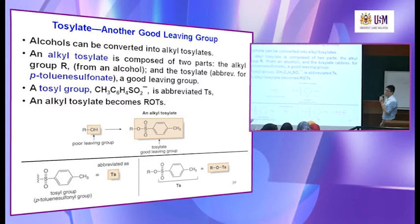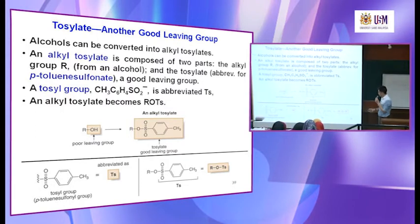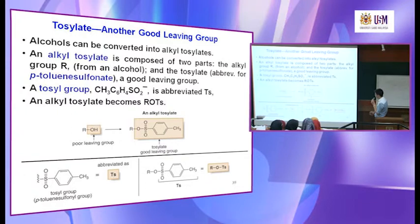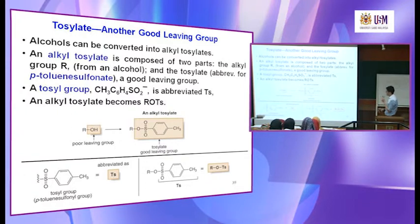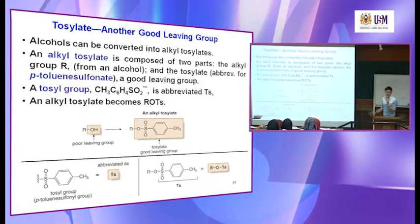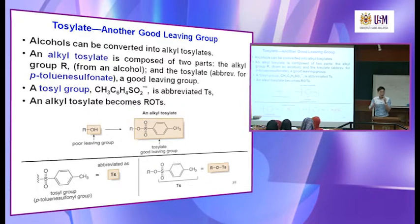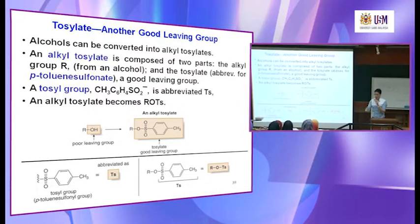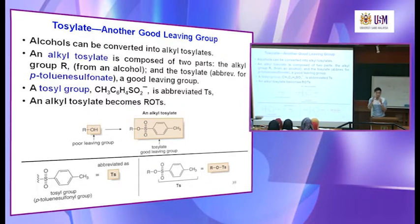Now we are going to study another leaving group — what we call a tosylate. Alcohol can also be converted to alkyl tosylate. Previously we said it converts to chloride and bromide, which are good leaving groups. In this case, tosylate is a bulky leaving group — bigger.